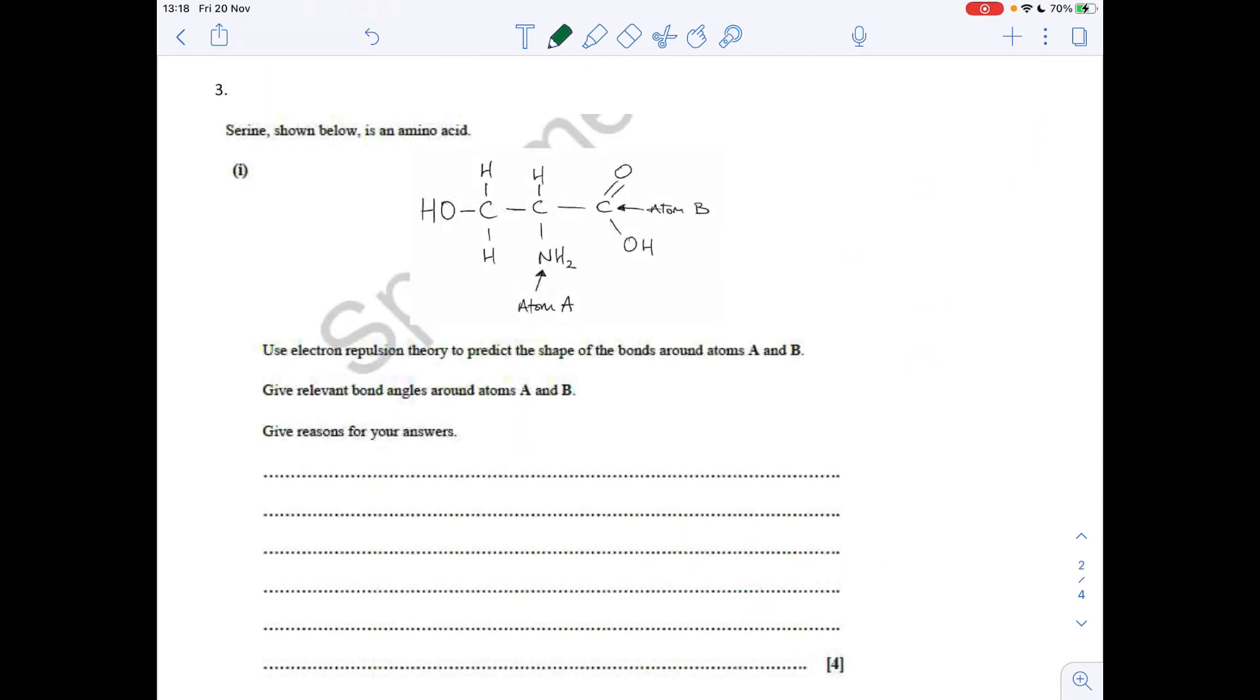Question three now. We've got to come up with the shape and the angles around atoms A and B and give reasons for our answers using electron repulsion theory. If we look at atom A first, so that nitrogen, I'm just going to draw it up here. So NH2, and then we've got the bond up to that carbon there. Remember, there's a lone pair on that nitrogen. If we count up the electron regions, we've got one, two, three, four. We've got three bonding regions, one lone pair.